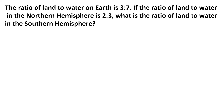The ratio of land to water on earth is approximately 3 to 7. If the ratio of land to water in the northern hemisphere is approximately 2 to 3, what is the ratio of land to water in the southern hemisphere?